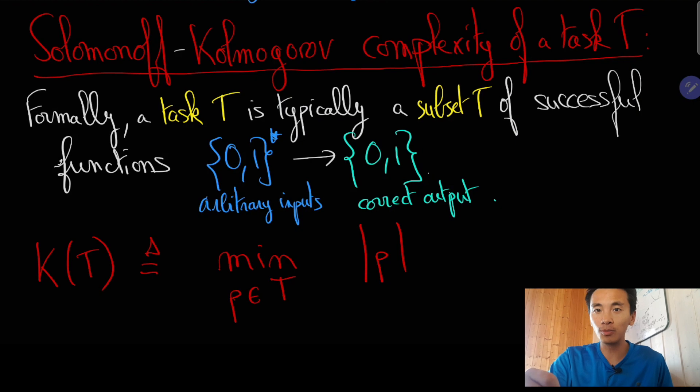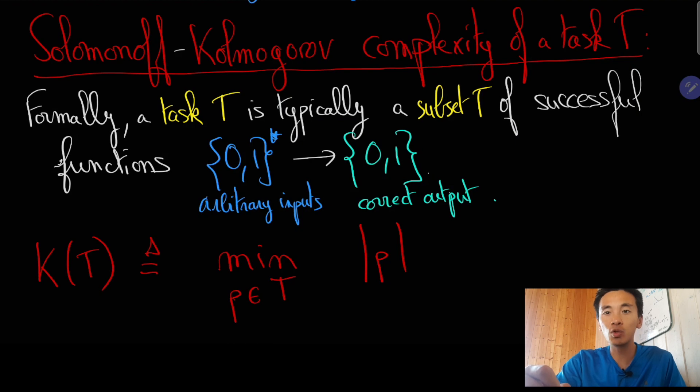To recapitulate, the Solomonoff-Kolmogorov complexity of a task is essentially the number of lines of code that must be written to program a machine to solve this task. As Turing argued, this measure is critical to understand why machine learning will outperform human-written codes on many tasks.